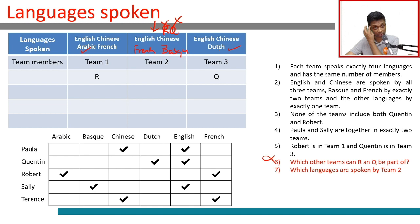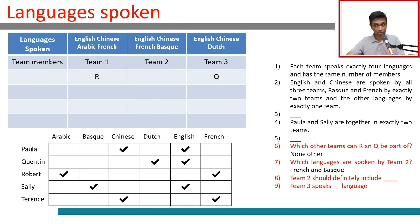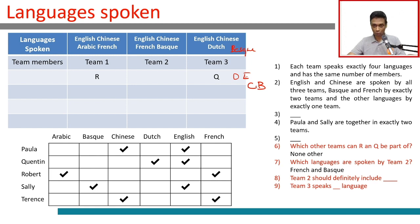Team 3 has English, Chinese, and Dutch. What should be the fourth language? French and Basque are each spoken by exactly 2 teams. Team 1 and team 2 both have French. So the second team with Basque must be team 3. Therefore team 3 also speaks Basque as its fourth language.